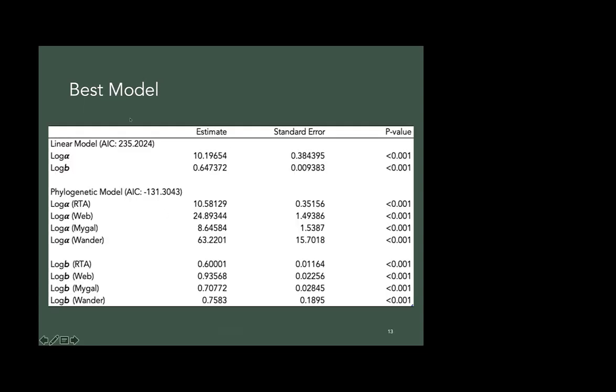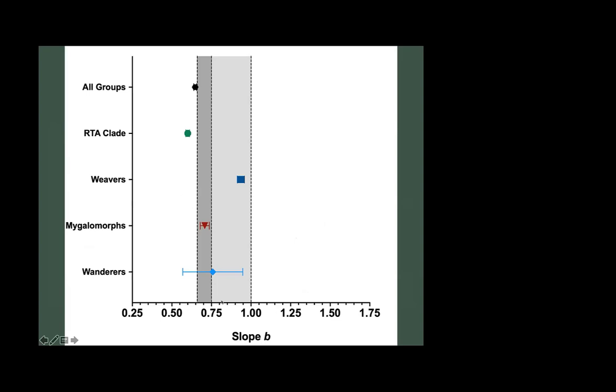And so these are my two models. These are just the AIC scores I wanted to show you. I had the AIC score for phylogenetic was a lot lower. So this was the model that I went with and here are the slopes. This is the slopes on a graph so you can see them better. The gray boxes represent 0.66 to one. And then this line in the center is 0.75. So what we saw was the RTA clade actually scales pretty low at 0.6. The weavers on the other hand have a pretty high scaling rate at like 0.9. Mygalomorphs are right in the middle. And then for the wanderers, this was the group that I had the least amount of data for. So it was significant, but the standard error is just very large. So it's hard to make predictions about why this might be this way without more data.